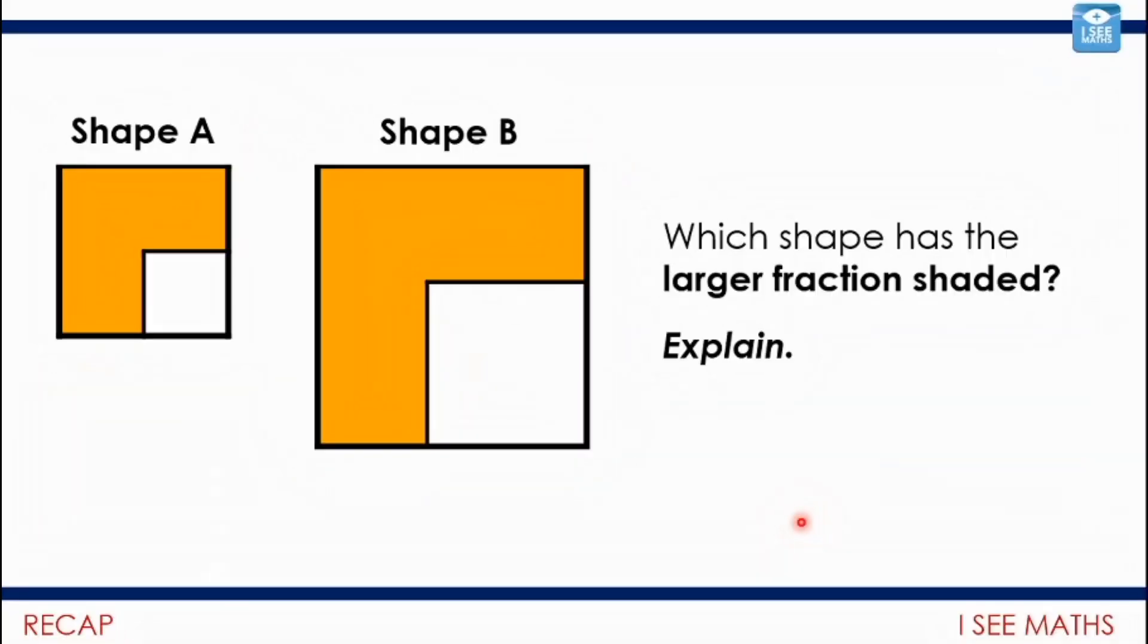Well, let's start our recap from yesterday, having a look at this example which you might have seen yesterday, or this might be the first time you're seeing it. So which shape has the larger fraction that is shaded? Which shape is the larger fraction shaded orange? And explain how you know. Pause the video. Okay, and let's have a look. Well, of course, Shape B has the larger piece that is shaded—this is a bigger piece than this piece—but actually Shape A has the larger fraction because it's got a smaller whole.